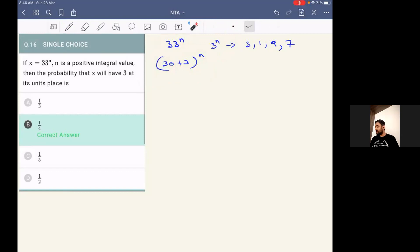And we know for 3 power n, the unit place will be either 3, 1, 9, or 7. So we have a total of 4 possible units. And every one of them will have equal chance of occurrence because the unit place will repeat in a cyclic order.